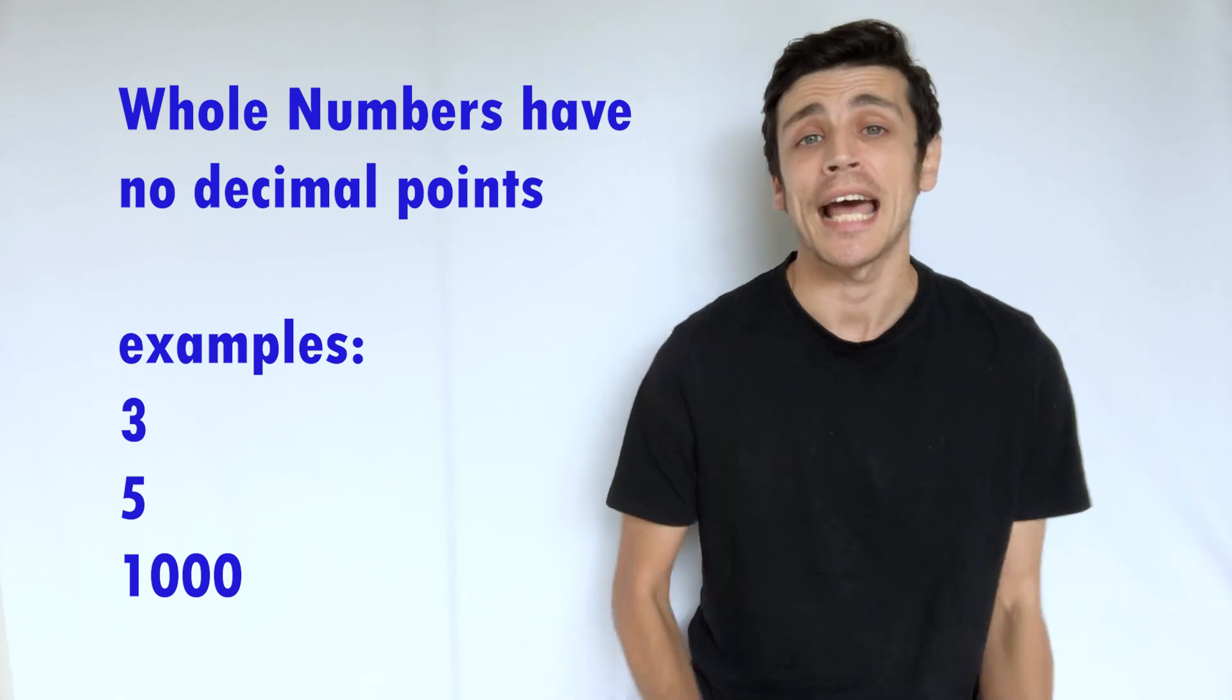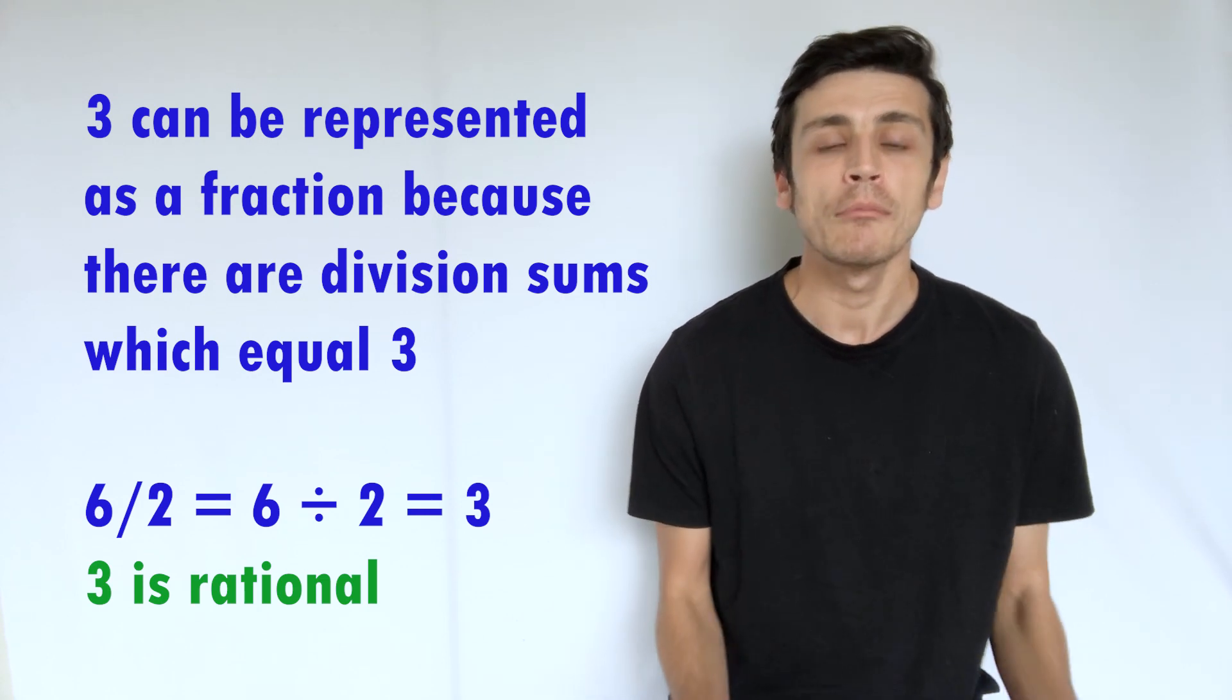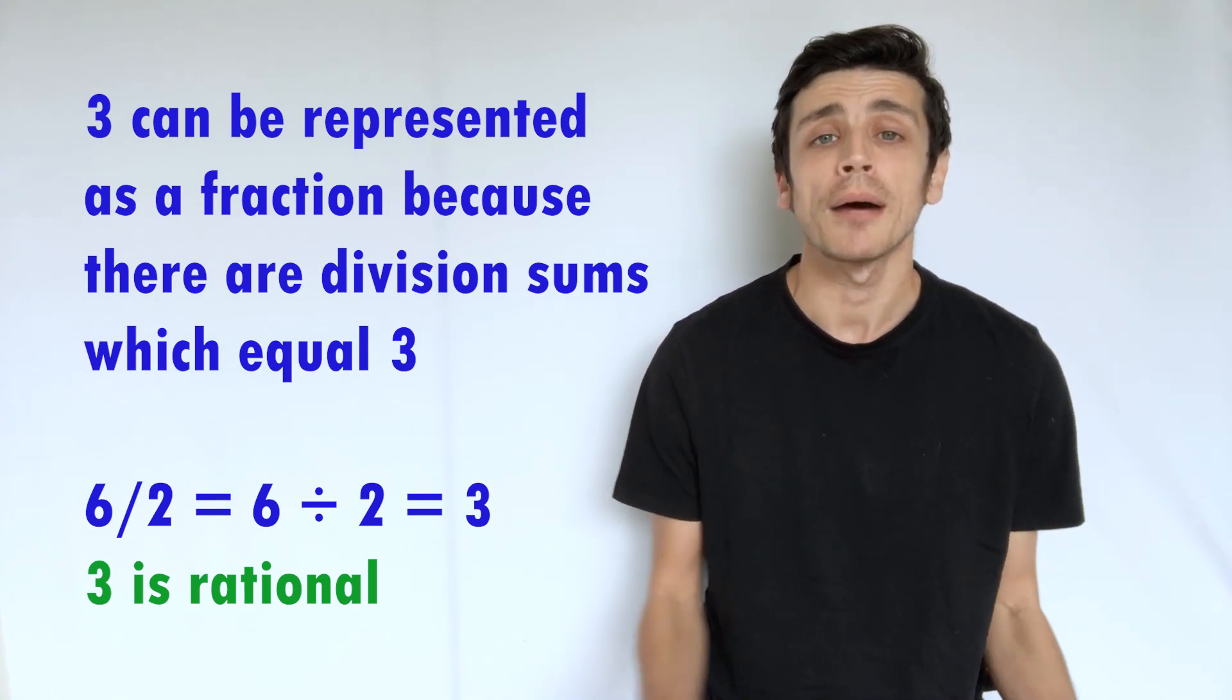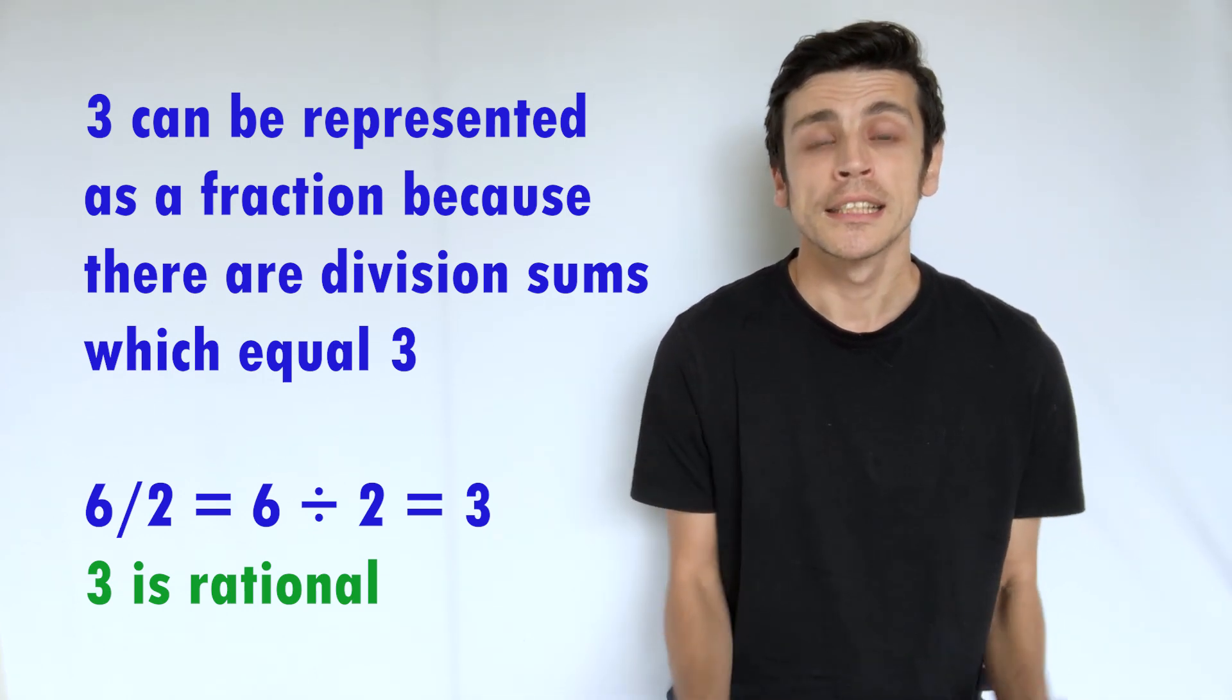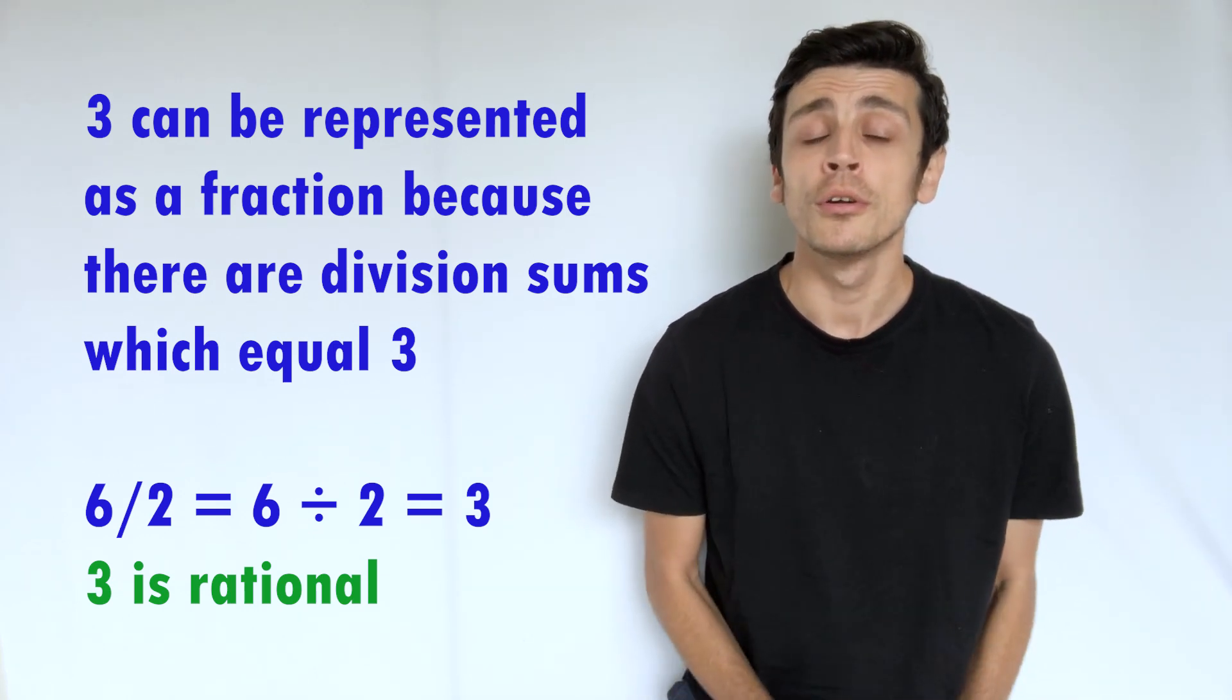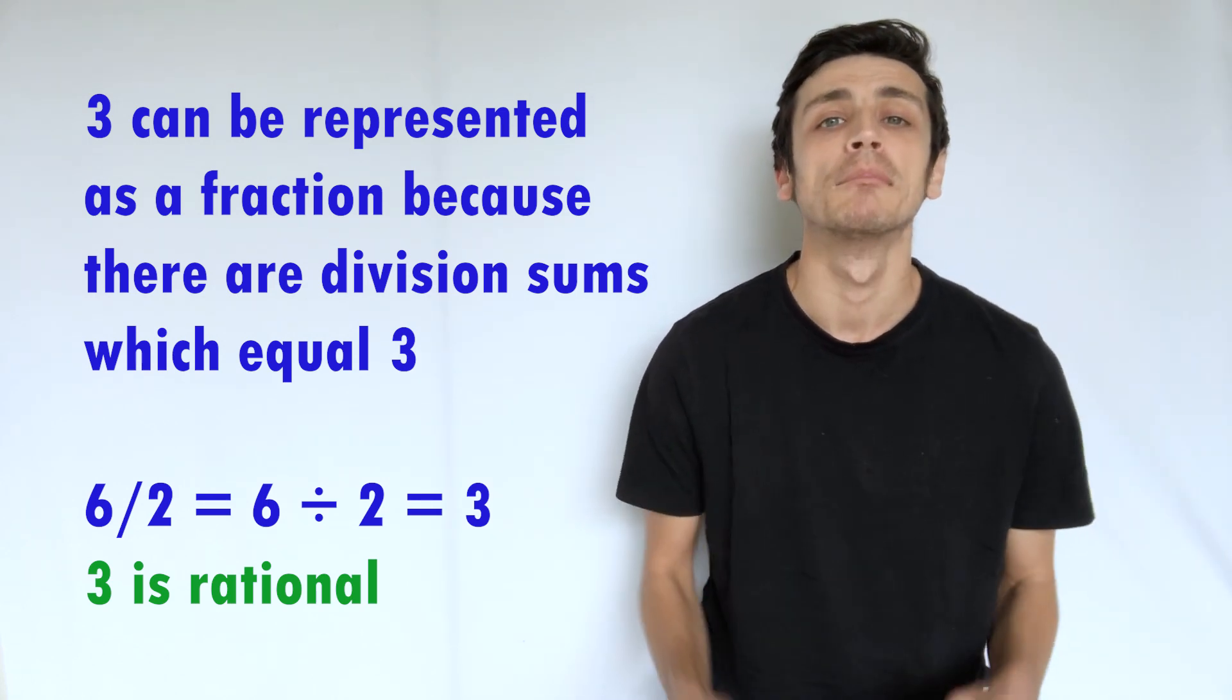So whole numbers will always be rational numbers because they can always be expressed as a fraction. Think about let's say the number 3. Well, can we think of two numbers divided by one another that would give us 3? Well, 6 divided by 2 would give me 3. So the fraction of 6 over 2 represents the number 3. So that's why whole numbers will always be rational numbers.